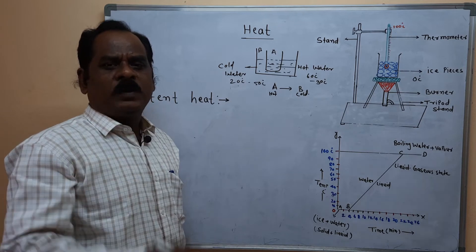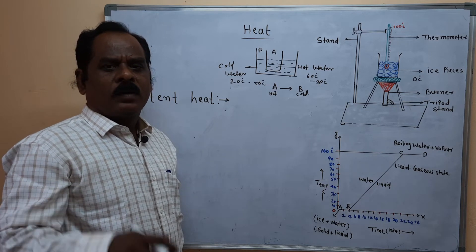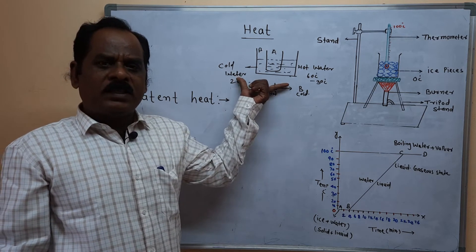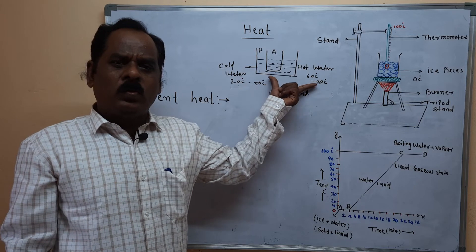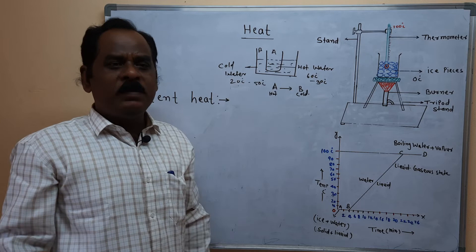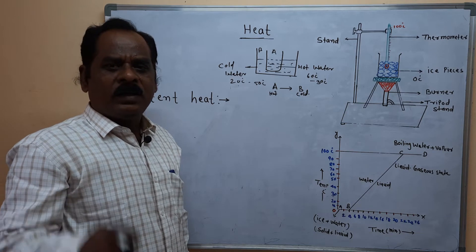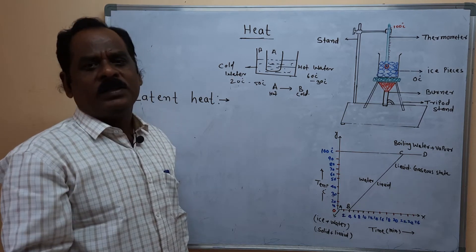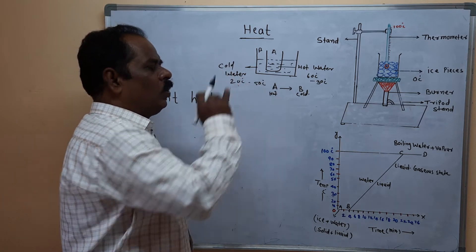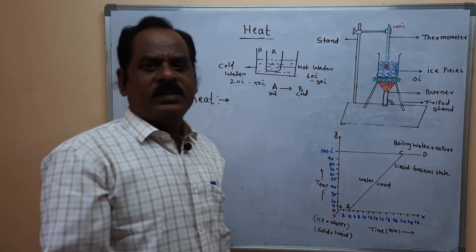This means that heat or energy transfers from beaker A to beaker B — that is, from hot water to cold water. This energy or heat is transferred by three ways: conduction, convection, and radiation. Heat is one of the forms of energy, and it transfers from a hot body to a cold body.